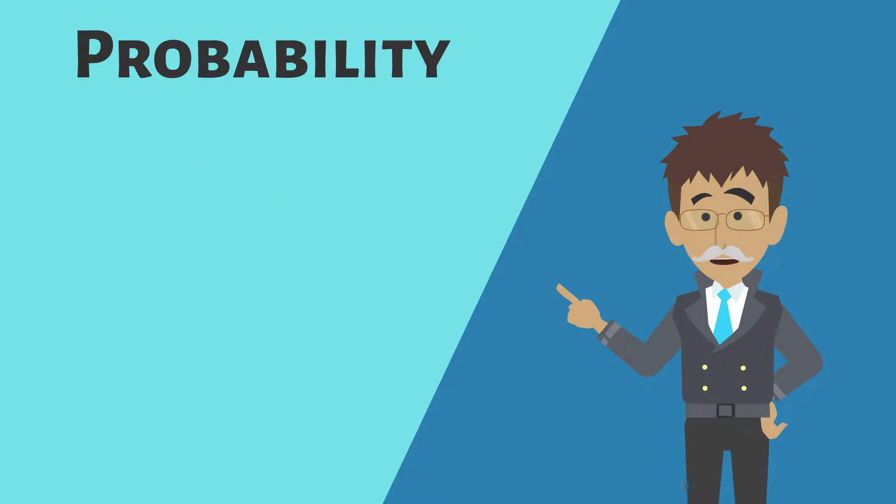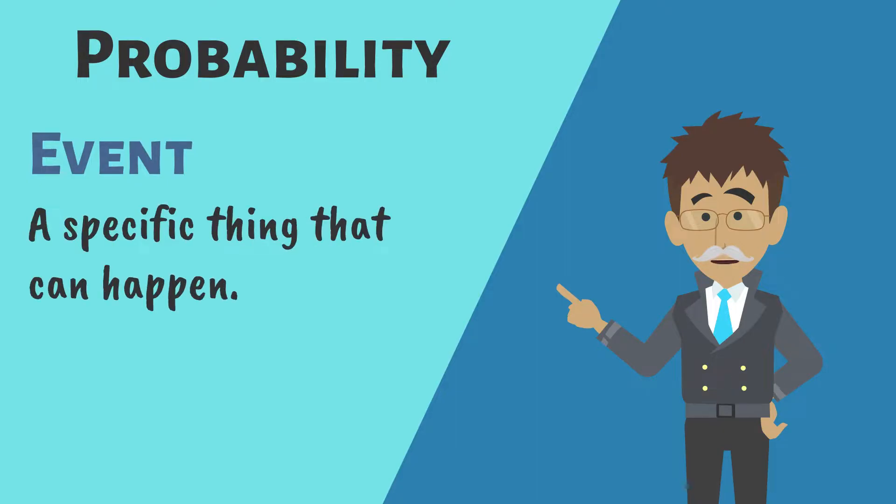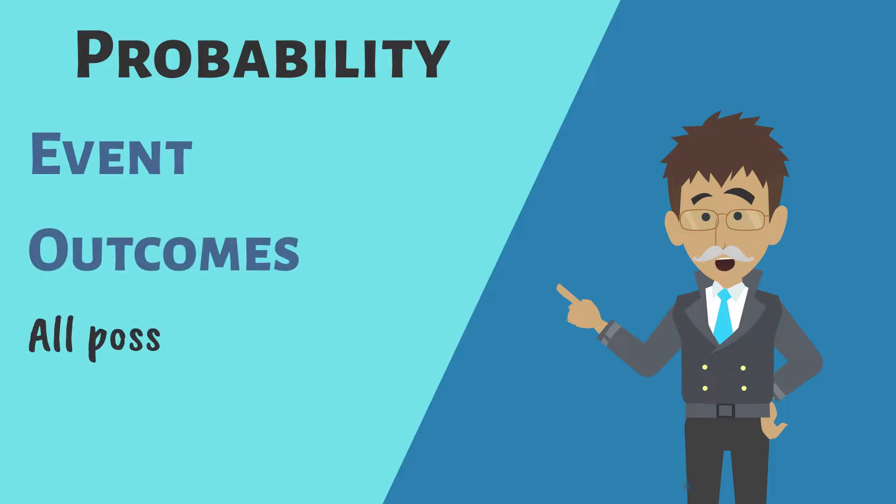In probability, an event is a specific outcome, such as rolling a die and landing on a certain number, or a team winning a game. Outcomes are all the possible things that may occur.